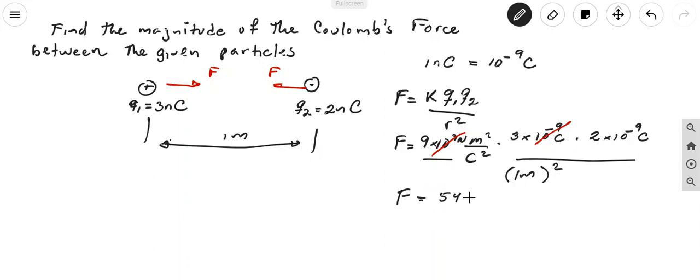Now the unit, well, we have 10 to the negative 9, of course, and then the units we have are newtons meter square over coulomb square, that are the units of the Coulomb constant.